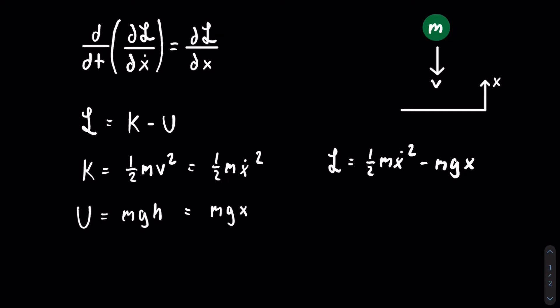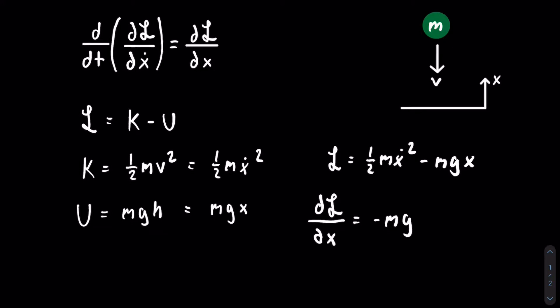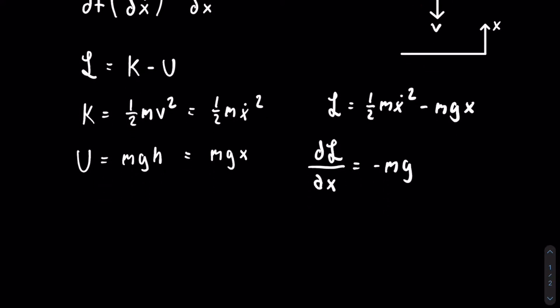Now that we have our Lagrangian, we can just start taking derivatives. The partial of the Lagrangian with respect to x is the first thing we do. As you can see, there is no x in the first term, so that's just going to be zero. So all we're left with is negative m g. Now we have the other side of the equation. So we can start out by taking the partial of the Lagrangian with respect to x dot. So to find this, we can just use the first term and we can use the power rule. So we multiply the first term by two and decrease the power by one. And this will get us m x dot.